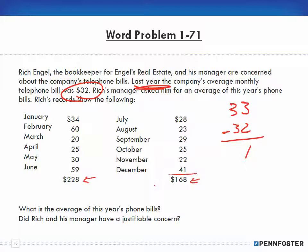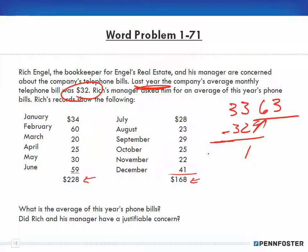If the difference were say $63 per month, that would be a huge jump and a real cause for concern. If the bill were lower than $32 you'd be happy about saving money, though from an accounting perspective you'd wonder why the phone is being used less — are sales being made? In answer to the question: $33 is the average monthly bill, the difference is $1, so it's not a justifiable concern.